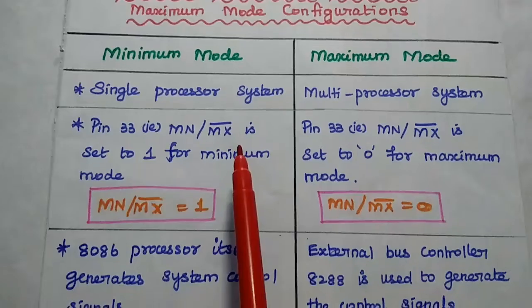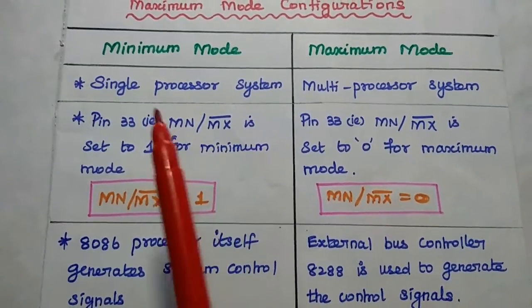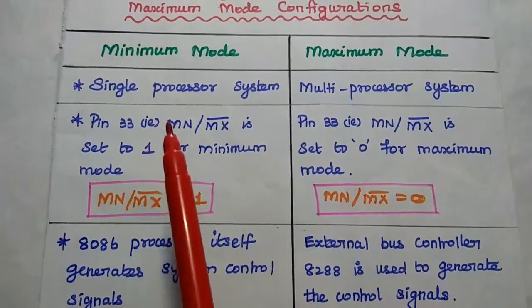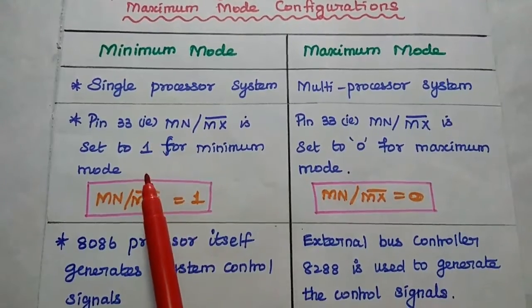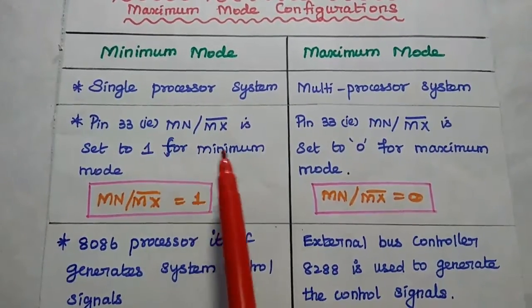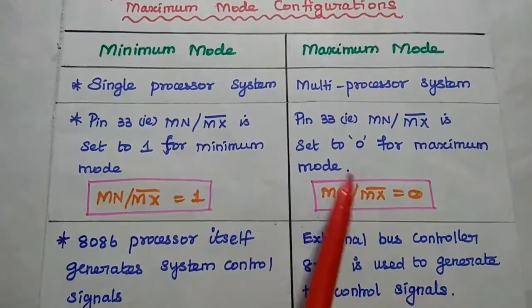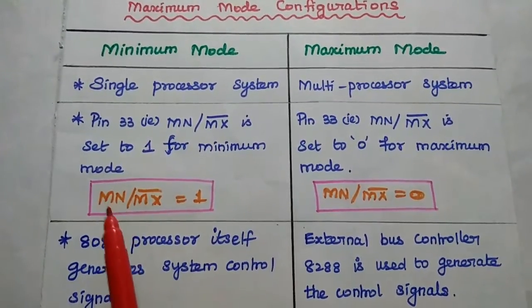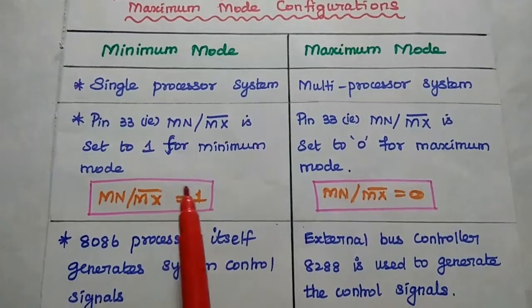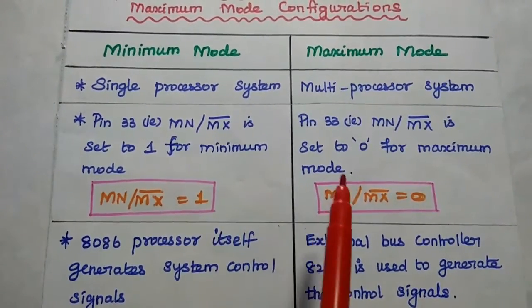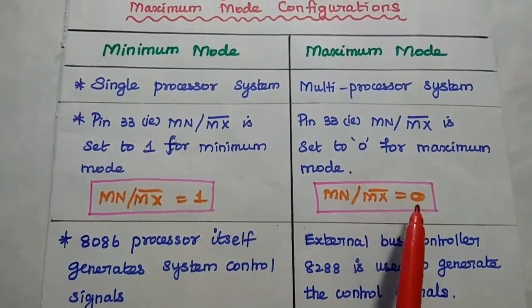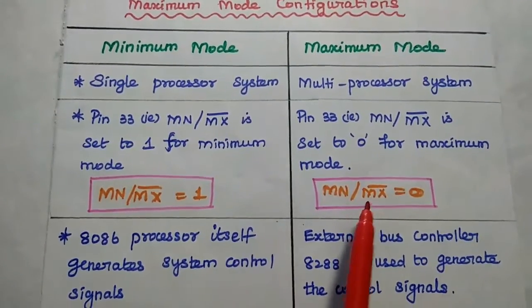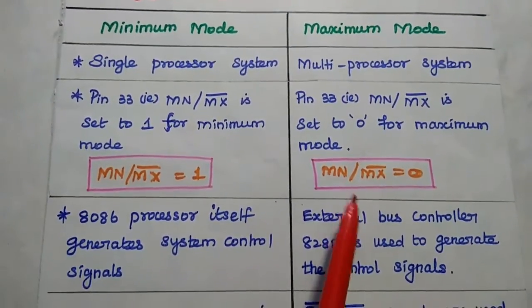In 8086 microprocessor, pin number 33 indicates whether the processor is going to be configured in either minimum mode or maximum mode. In case of minimum mode, this pin MN/MX bar is set to 1. If it is equal to 0, it can be configured as maximum mode.